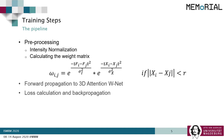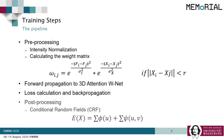For training the algorithm, intensity normalization and calculation of the weight matrix were performed before supplying the images to the network. Then forward propagation was performed, followed by calculation of the loss and backpropagation. Finally, conditional random field (CRF) was applied as a post-processing step to recover the edges.